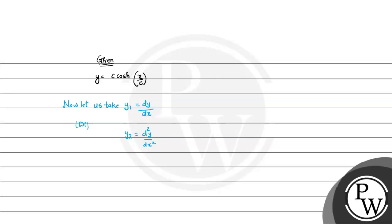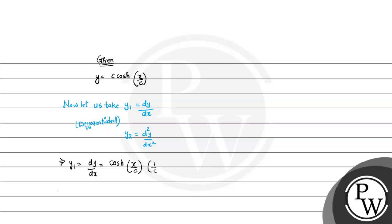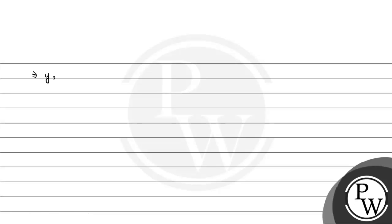We differentiate y = c·cosh(x/c). So y1 = dy/dx = sinh(x/c)·(1/c). Then y2 = d²y/dx² = cosh(x/c)·(1/c), which gives us y2 = y/c.